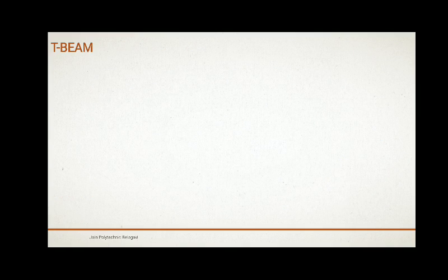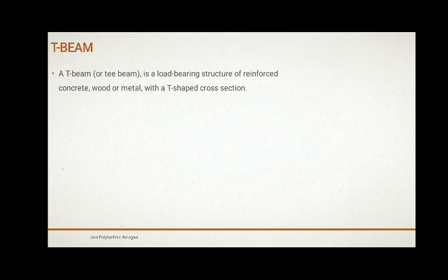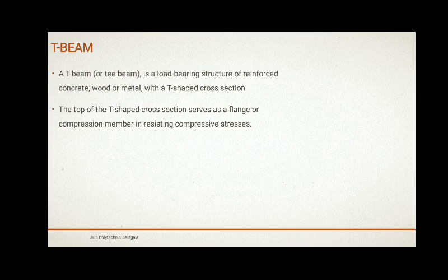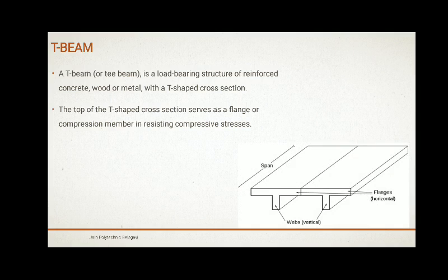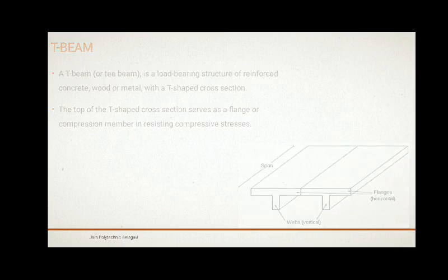Next is T-Beam. T-Beams are beams which are connected to slabs, forming a junction. They are also in the shape of L, which are at the edges of the slab. It is a load-bearing structure of reinforced concrete, wood, or metal with a T-shaped cross-section. In a T-Beam, the upper part, that is the slab, acts as a flange, and the lower part is called the rib or web. Here you can see a figure of a T-Beam — the upper part is the flange, the lower part is the web, where the upper part takes the compressive loads or compressive stresses.